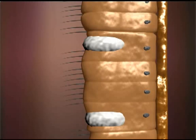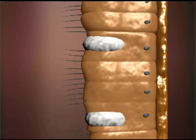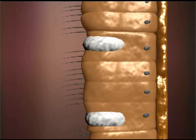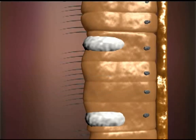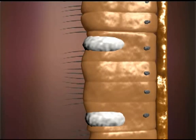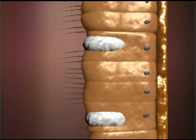The inner wall of the trachea and bronchi is lined with a row of ciliated epithelium. Ciliated epithelium consists of ciliated cells and goblet cells. Ciliated cells possess cilia which beat rhythmically to push fine dust particles mixed with mucus into the esophagus. These cells protect the lungs from dust particles.